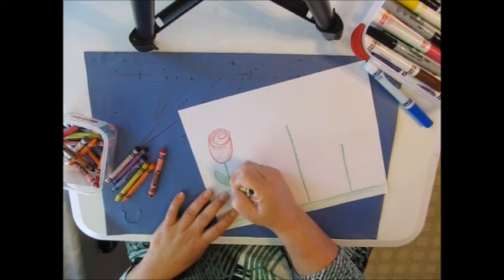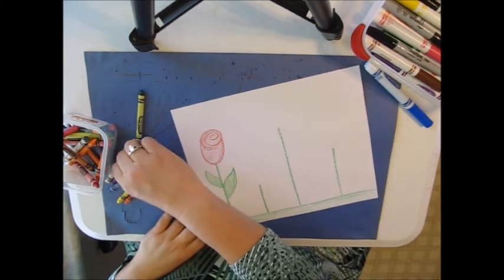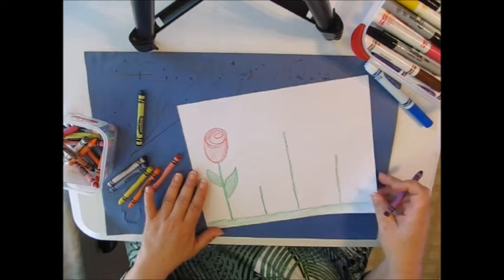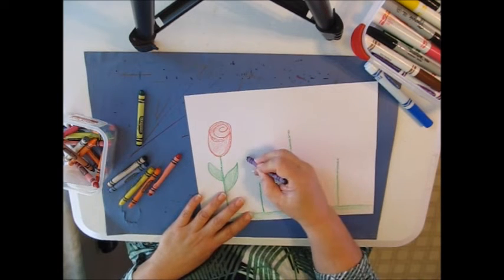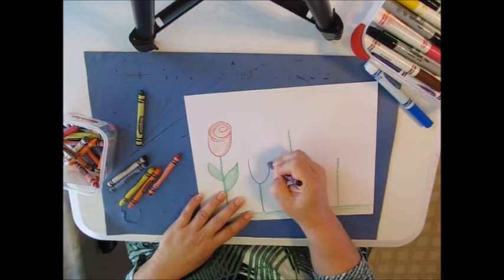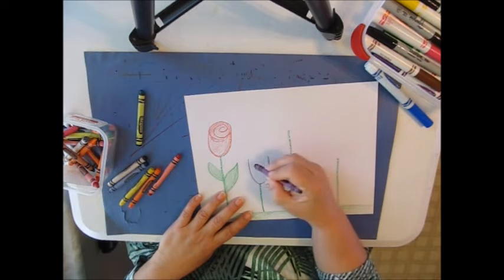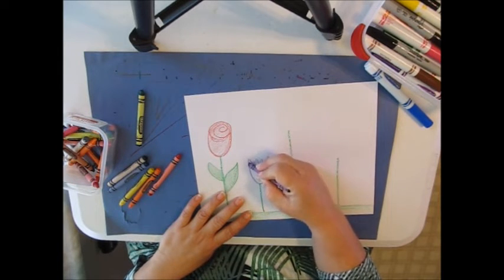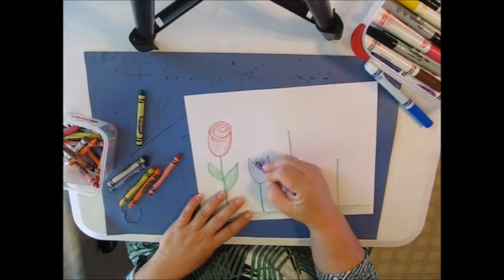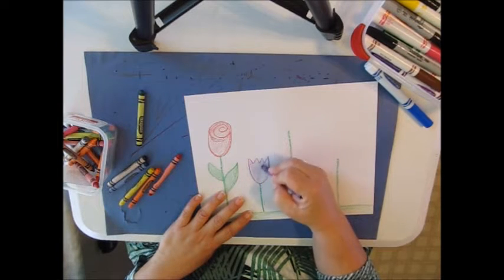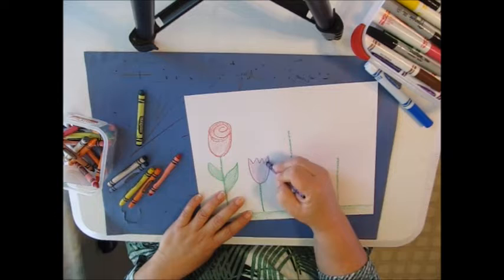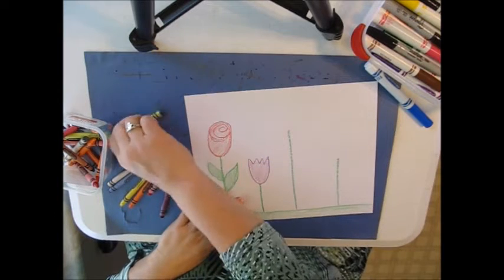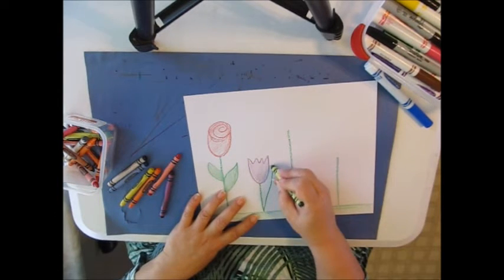So my next flower is going to be a tulip. Tulips grow really early in the spring. Tulips start with the letter U, and then it has a zigzag line at the top, just like that. I'm going to color that one in with my crayons. They also have leaves, but their leaves are very tall and thin triangles like this.